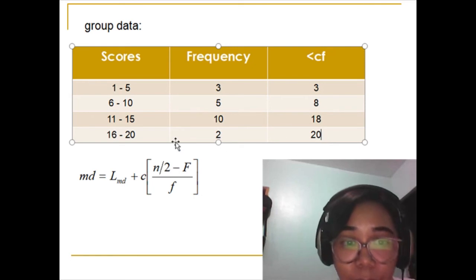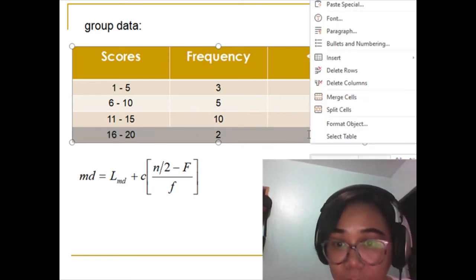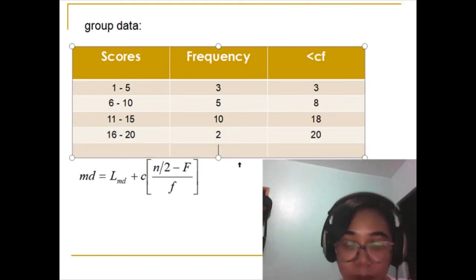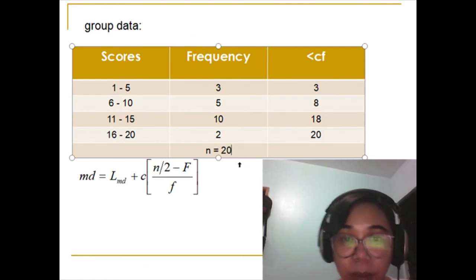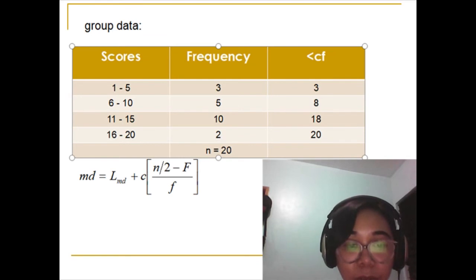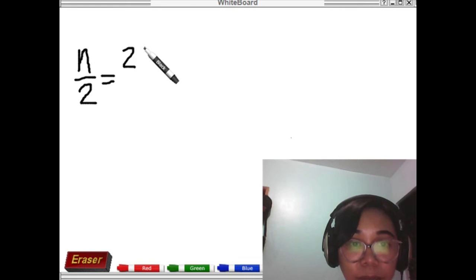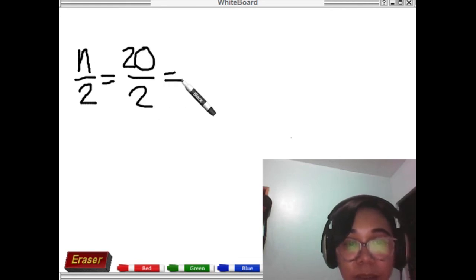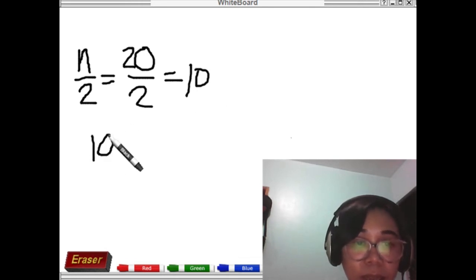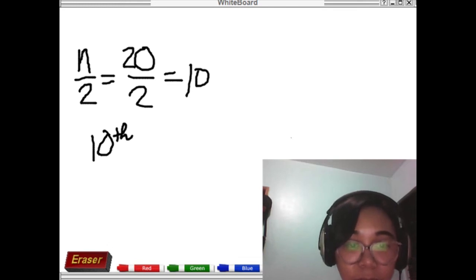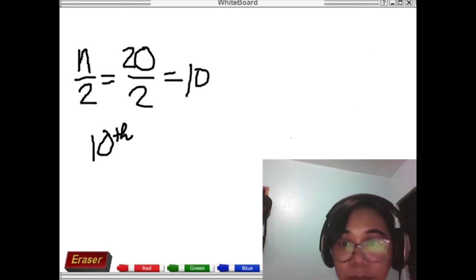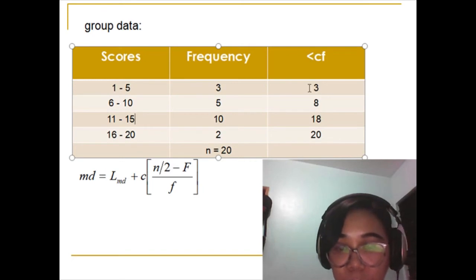In this case we have cumulative frequencies of 3, 8, 18, and 20, so n equals 20. To locate the middle value of our data set, since we have 20 observations, we simply divide n by 2. Since n is 20, we divide by 2 to get 10, meaning the 10th value is the median value. Now look at our cumulative frequency to find where it falls.